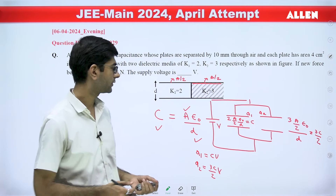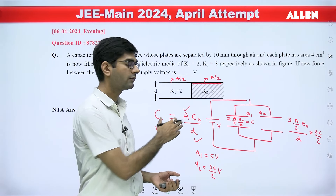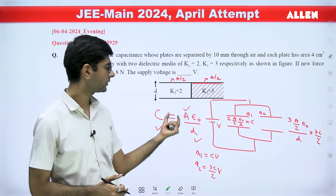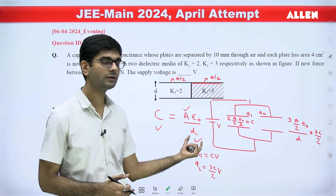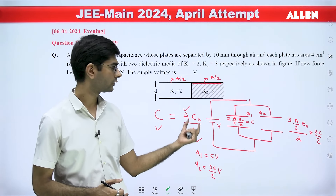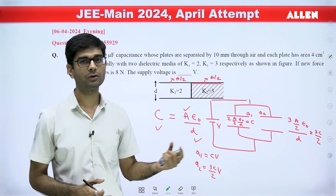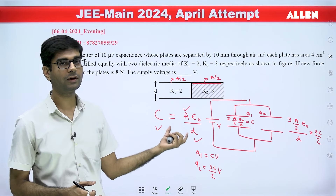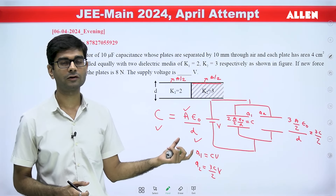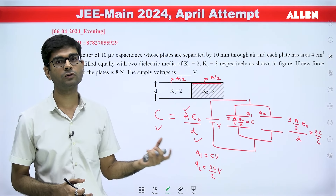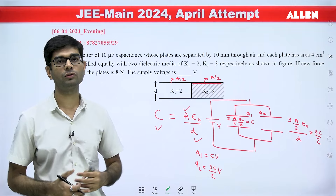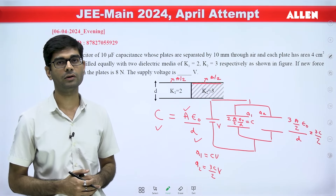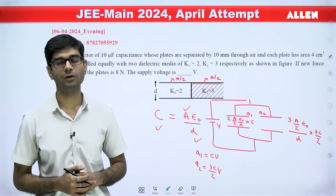The problem here is that the data given was inconsistent because C is known to us, A is known to us, D is known to us — so the value of ε₀ can also be found using this expression, but it does not match the known value of ε₀, which is 8.85 × 10⁻¹².